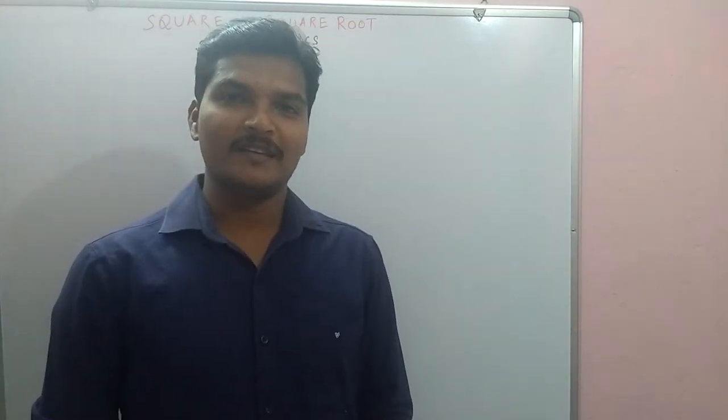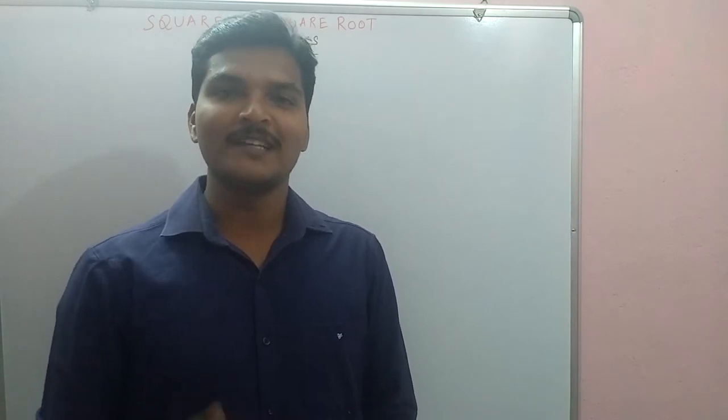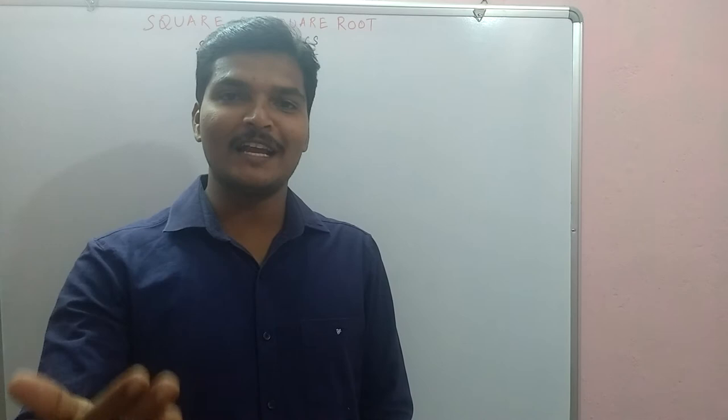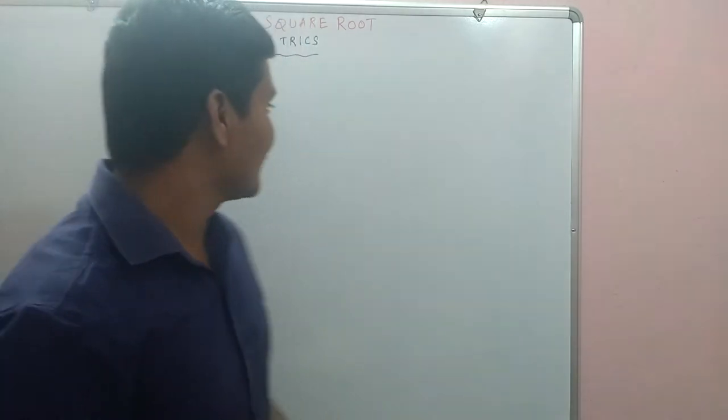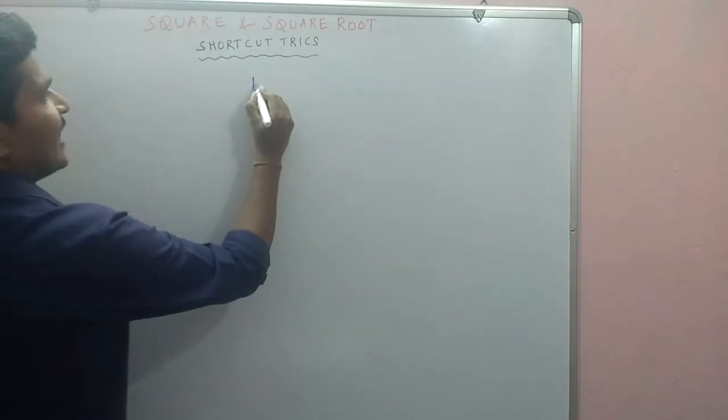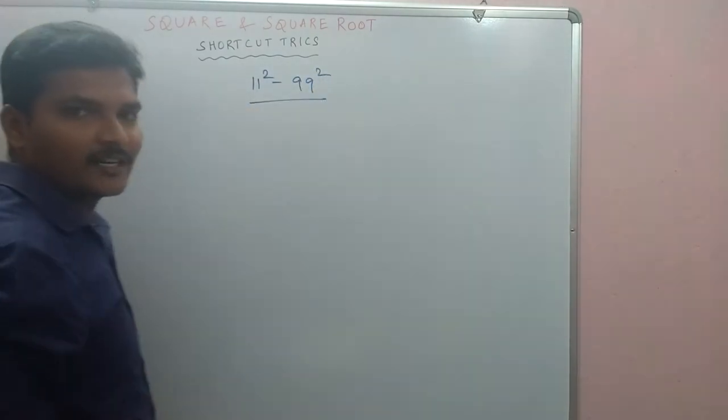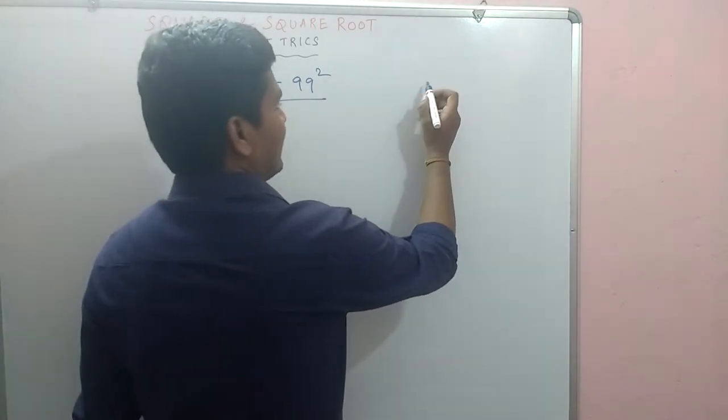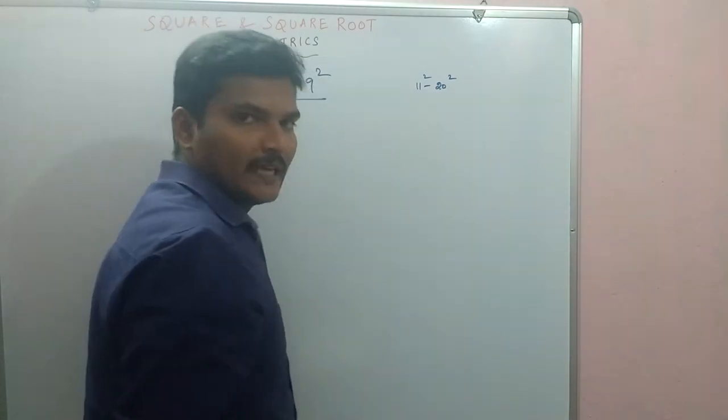Now, what number is required? I will tell you the shortcut. 11 square to 99 square, this shortcut. If we have a shortcut, 11 square is 121. It is 9801.